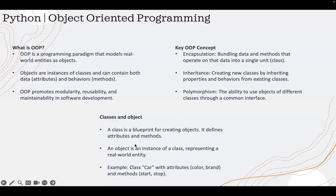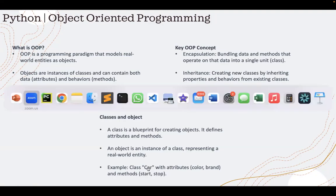A class is a blueprint for creating objects — it defines attributes and methods. An attribute is the data; a method is the behavior that operates on that data. An object is an instance of a class representing a real-world entity. For example, a car with attributes color and brand, and methods start and stop. Encapsulation is when I create the car class — the attributes and methods are encapsulated within that class. Let's see some code examples now.